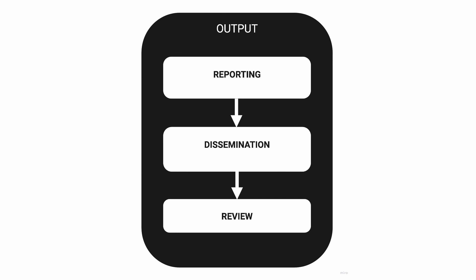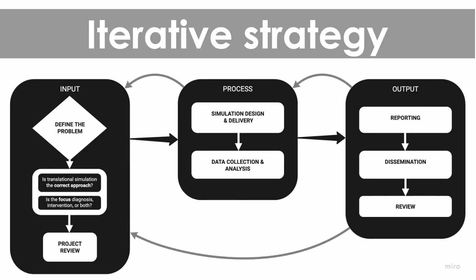In the output stage, we consider how to report and disseminate findings and solutions, and then review our whole translational simulation process. When reporting, we need to think about the target audience, what information they should receive, and how — it will be different for ICU leadership, frontline workers, or a public audience in journal articles or press releases. The review phase is always important because you always learn from the project you've just done, with implications for future projects. It's worth emphasising that while this sounds linear, it's very much an iterative process — you're always revisiting the problem and focus based on what you learn through repeated simulation activities.